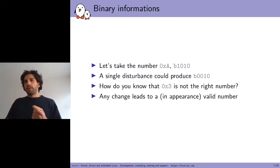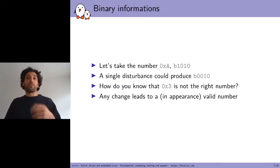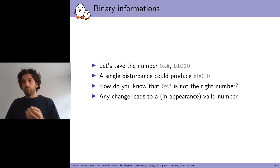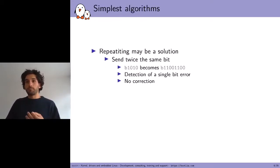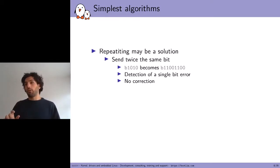The problem is with binary data you don't necessarily have this possibility. If you take any number — let's take 0xA, which is binary 1010 — a single disturbance, no matter where it appears, will produce a valid number; for instance, 0010, which is 0x2. Any change in this binary value will lead to another valid number. Repeating may be a solution. If you send twice all the bits, 1010 becomes 11001100 — you can detect a single bit error, but you can't correct it. And there is another problem: there is 100% overhead, you have to share twice as much data as you actually want to share.